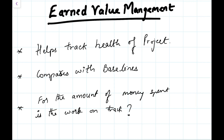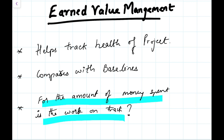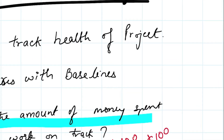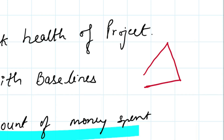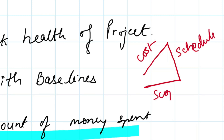Earned value management is: for the amount of money we have invested, is the work on track? Let's say you invested $100 to do something — was the work done equivalent to $100? Did we earn value from this work? The important things being tracked are cost, schedule, and scope. These three things are what we are tracking in earned value management.